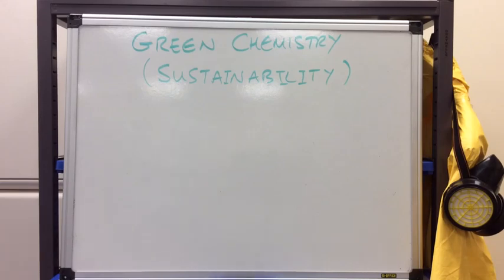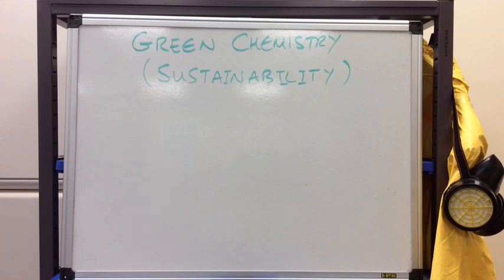In this video we're going to look at the various ways chemists can make their processes more sustainable. This branch of chemistry is referred to as green chemistry, and the green part obviously refers to the fact that these changes are better for the environment.